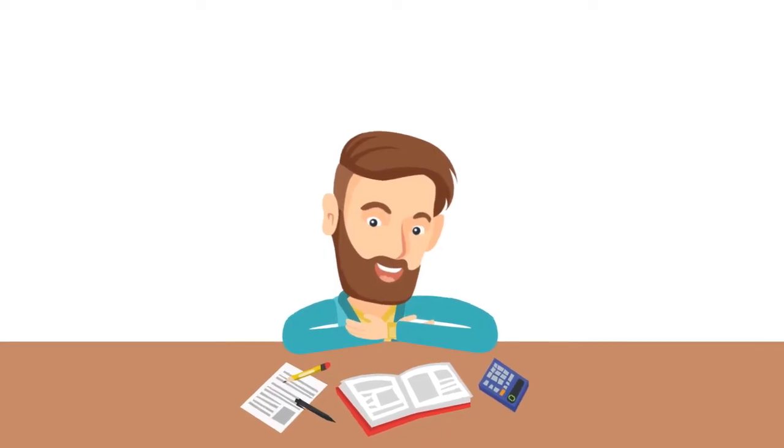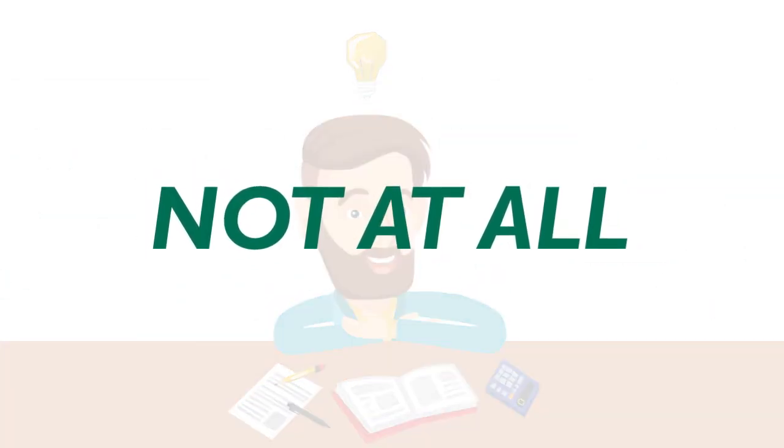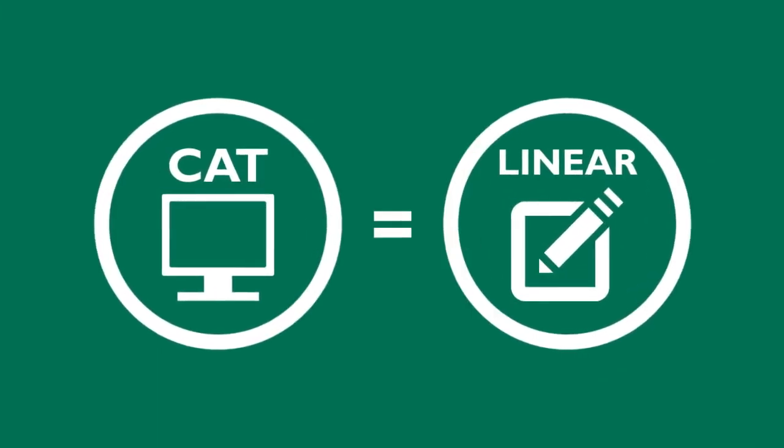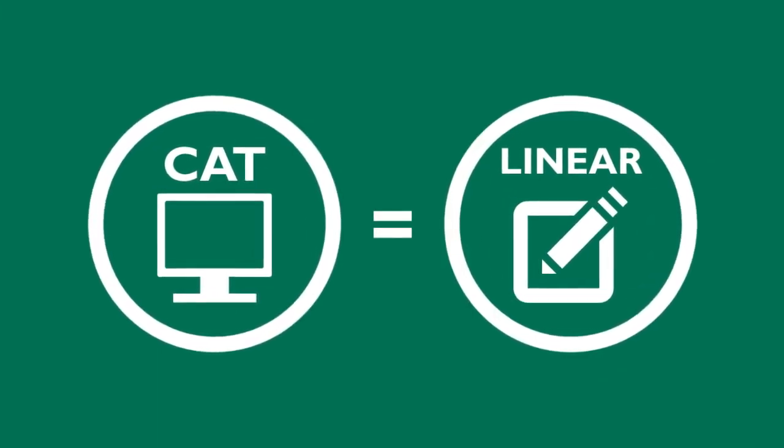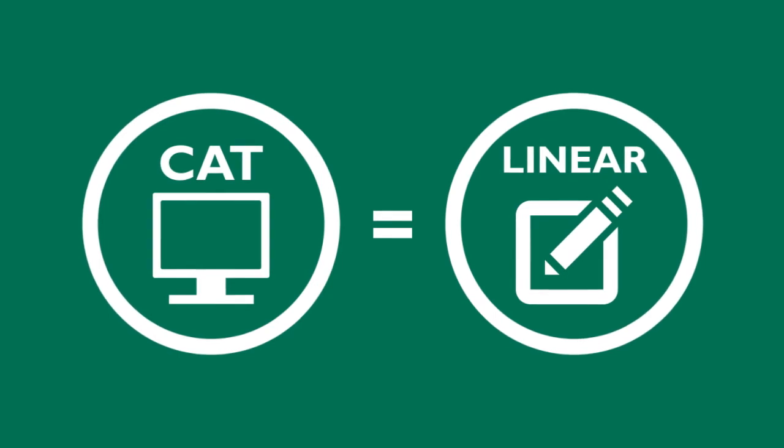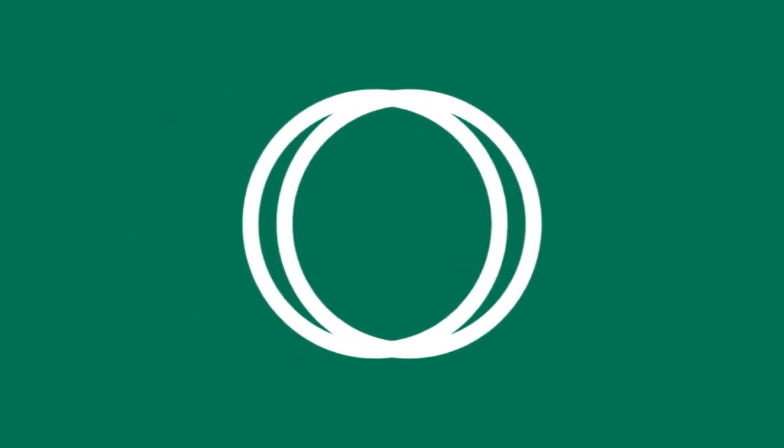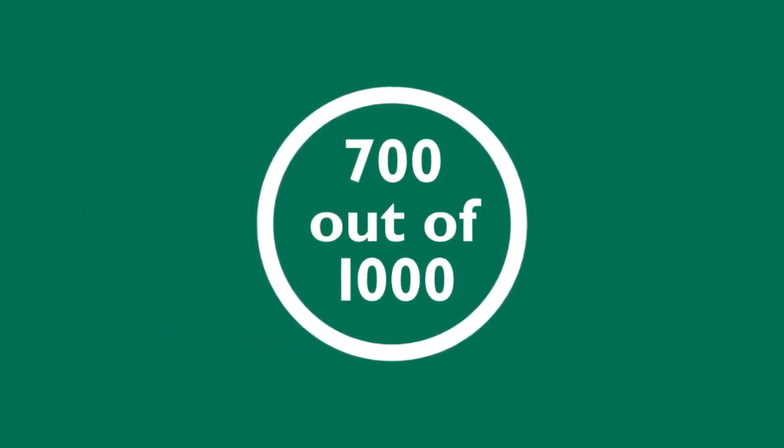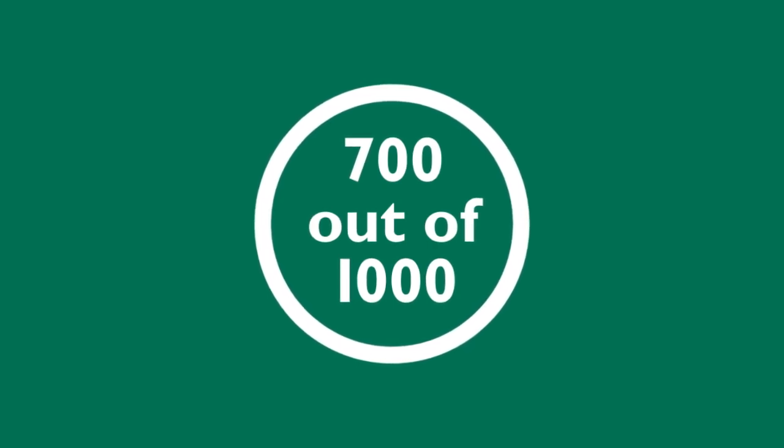Should you change the way you study? Not at all! The CISSP CAT reflects the same exam content outline and passing standard as the linear version. You still need to demonstrate the same level of competency and score 700 out of 1,000 to pass, and you'll get your results right away.